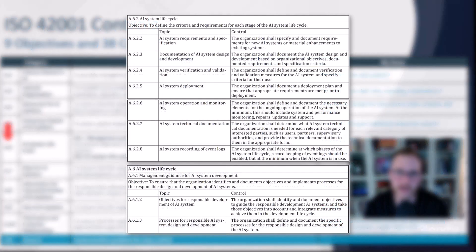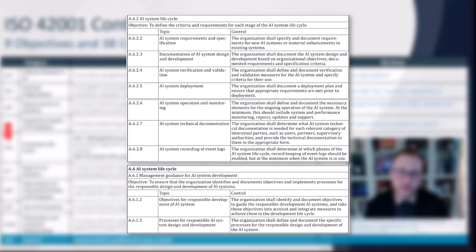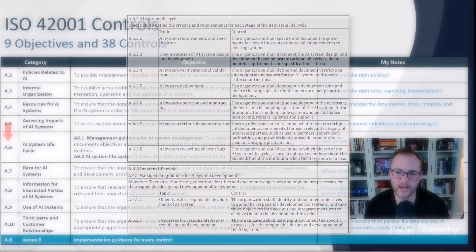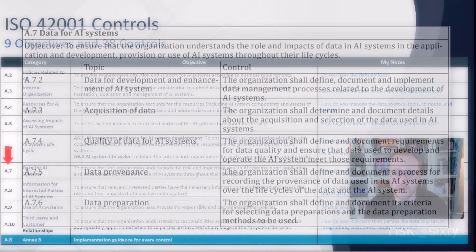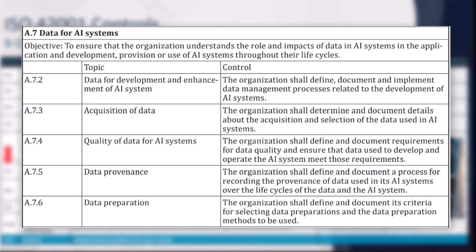A6 is AI systems life cycle. Simply stated, it asks whether the way you develop AI is responsible and trustworthy, and whether you have integrated AI into your system development and product life cycle.